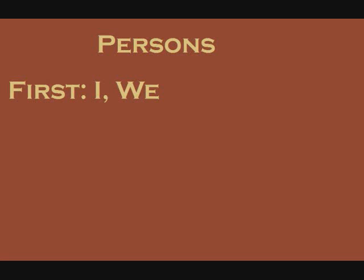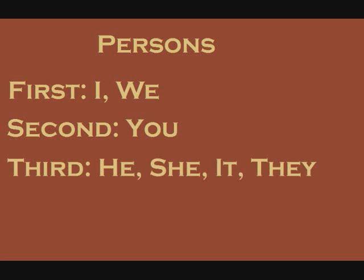There are four persons in DANGEN NIERA. The first person describes the speaker — it is the I/WE form. The second person describes the person you're talking to — the YOU form. The third person describes a specific individual, thing, or set of individuals or things — the HE, SHE, IT, and THEY form. The fourth person describes generalities or unspecified individuals or things — the ONE or SOMEONE form.